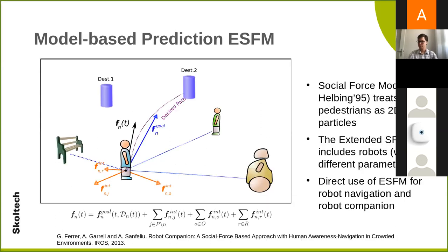The second part for motion prediction is model-based. In this case we were using the Social Force Model, which was proposed long ago by neuroscientists and is a very popular, simple, and attractive model. It treats pedestrians as dynamical particles with attractors and interaction forces. These forces superpose and the generated path depends on this interaction.